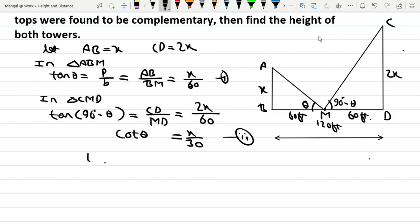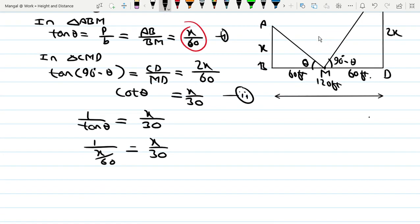Since tan(90 - theta) equals cot theta, and tan theta equals x over 60, we have cot theta equals 60 over x. So 60 over x equals x over 30.